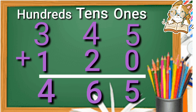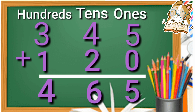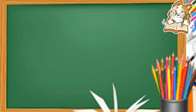Three hundred forty-five plus one hundred twenty, answer will be four hundred sixty-five. Five plus zero is five, four plus two is six, three plus one is four.